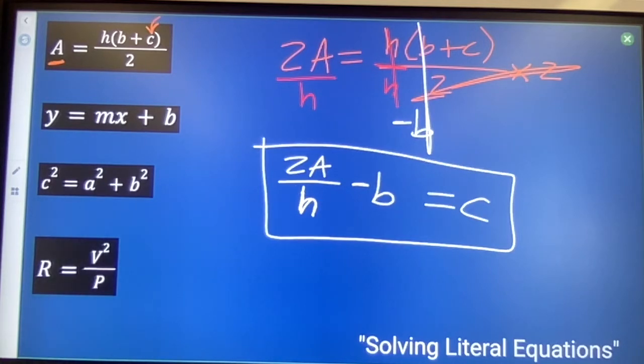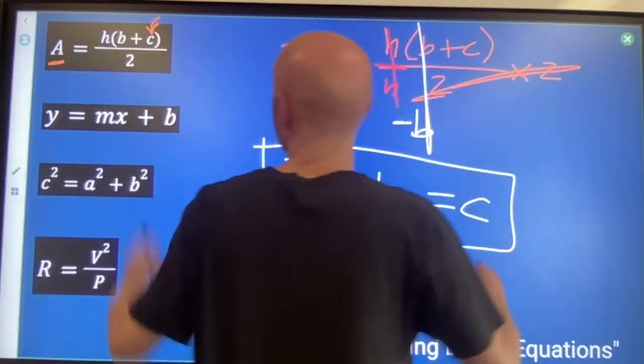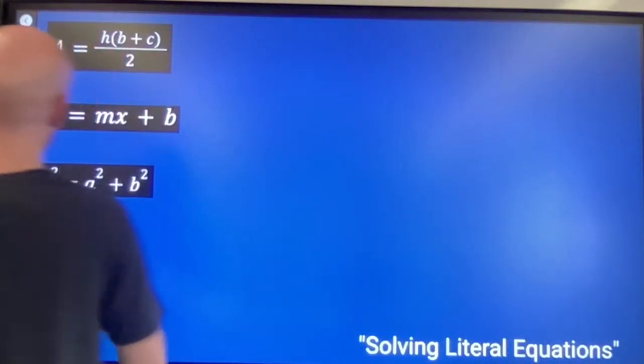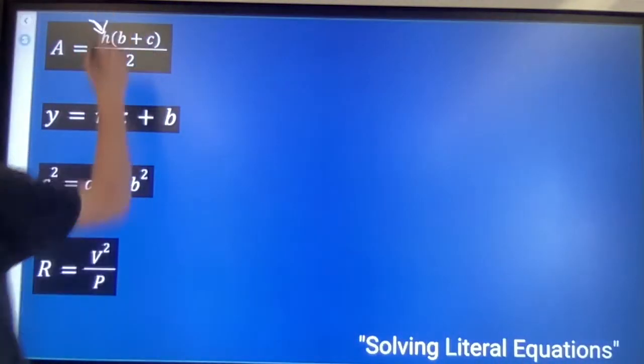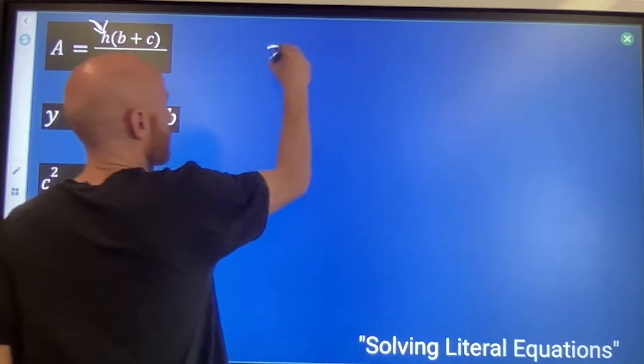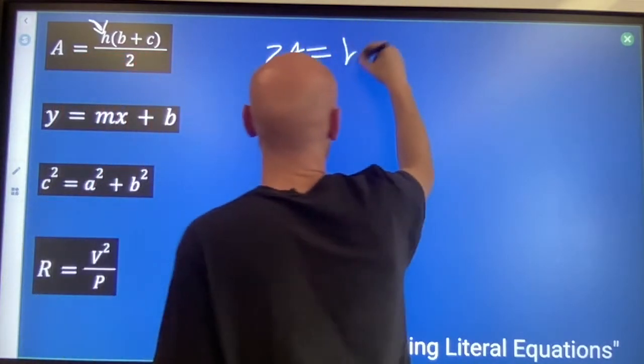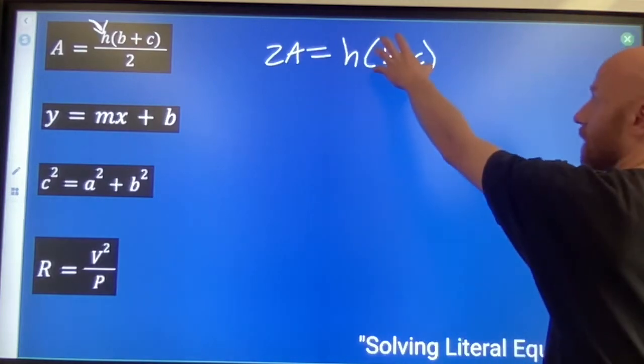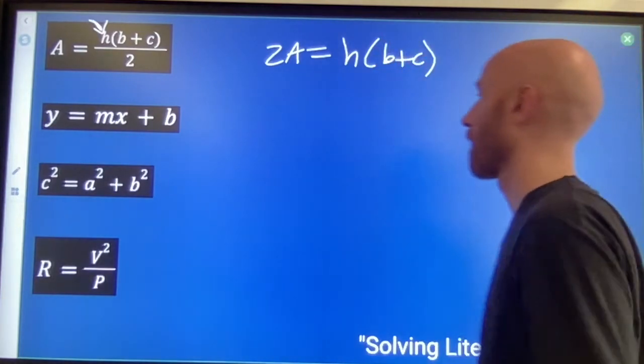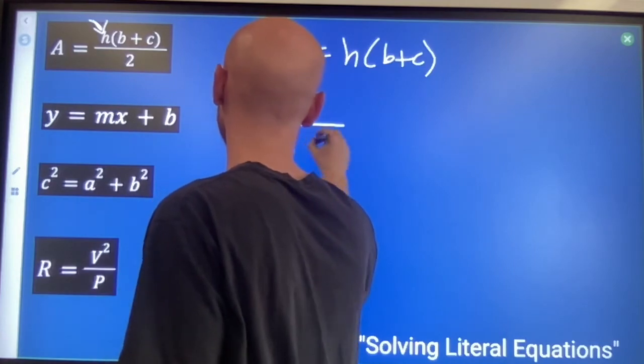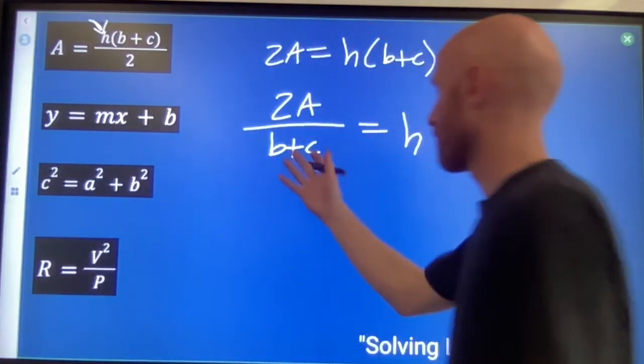I could do the same thing. I could say let me solve for H instead. What do I have to do to get this letter H by itself? And again we'd be multiplying both sides by 2 so we get 2As equals H times B plus C, and then I could divide by this parenthesis. 2As divided by B plus C equals H. Done.